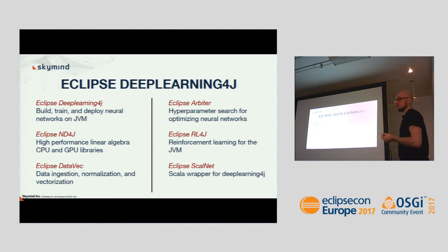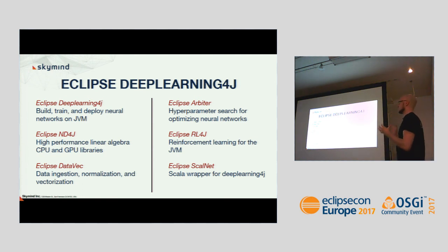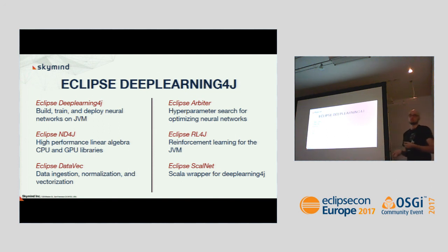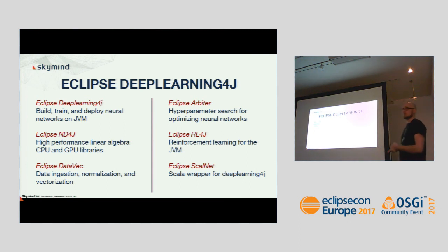At Eclipse Deep Learning 4J, we have a number of open source tools. Most notably is Eclipse Deep Learning 4J itself, which you can use to build, train, and deploy neural networks — I'll show an example in a moment. The underlying basic block is our powerful tensor library called ND4J, which stands for N-Dimensional Arrays for Java. It's a general-purpose tensor library optimized for CPU but also has GPU acceleration using CUDA and cuDNN.